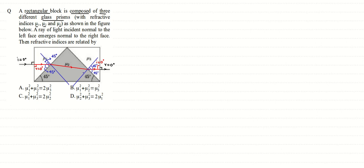Marking the angles: this angle as r1 and this angle as r2, the two normals intersect at a point, forming a triangle. The sum of all three angles of this triangle must equal 180°. Therefore, r1 plus r2 plus this angle θ equals 180 degrees.